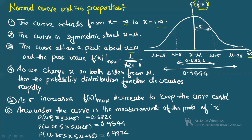The peak value, f_max, is equal to 1 / √(2π σ). You can verify this by substituting x = μ into the formula — the exponential term becomes e⁰ = 1, leaving 1 / √(2π σ) as the maximum value of the probability distribution.